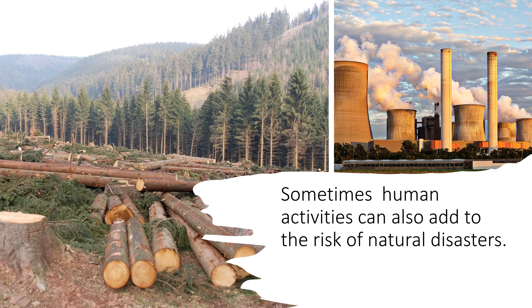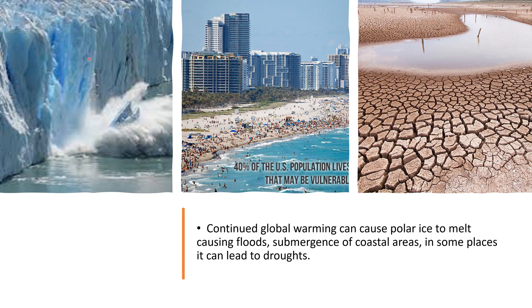Sometimes human activities also add to the risk of natural disasters. Deforestation and burning of fossil fuels contribute to global warming. Continued global warming can cause polar ice to melt, which can cause submergence of coastal areas, because when polar ice melts it leads to the rising of sea levels. In some places it can also lead to droughts, because continued deforestation reduces rainfall.